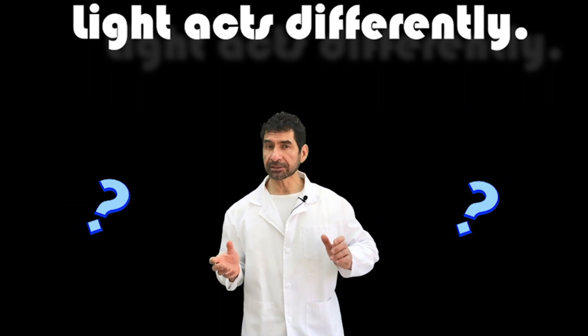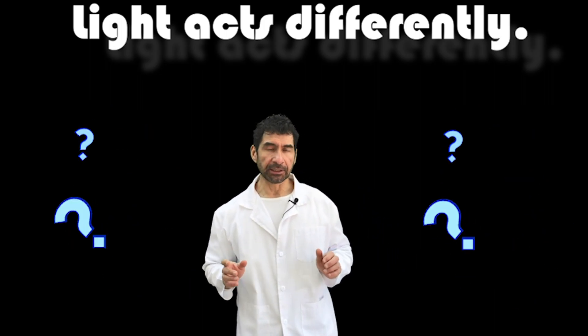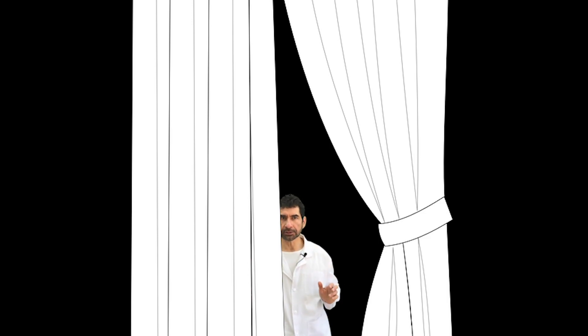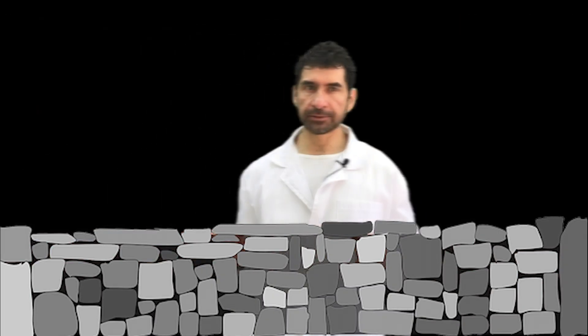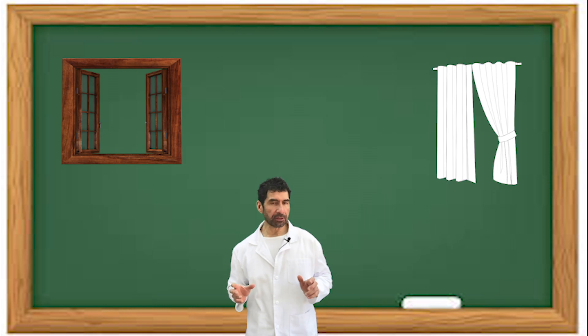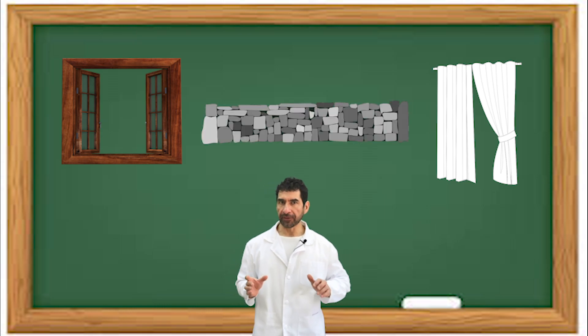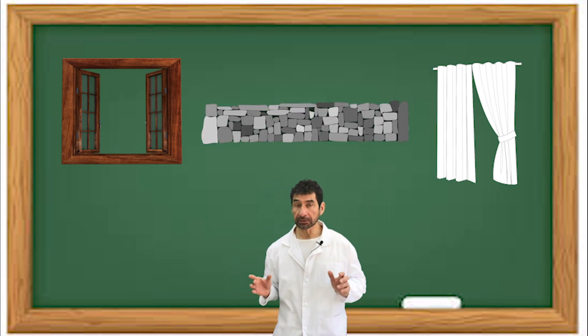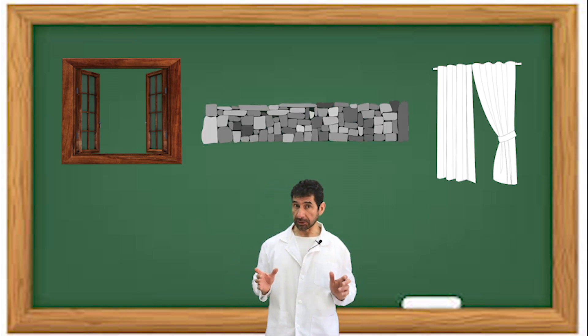Light acts differently when it strikes windows, silk curtains, or brick walls. How does each material affect the light that strikes it?